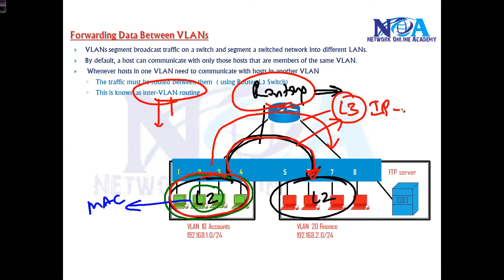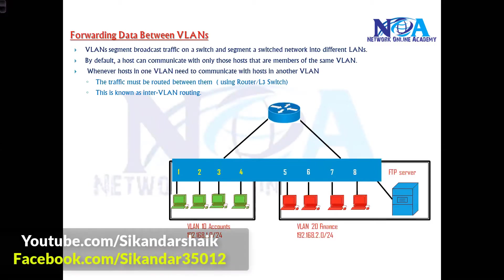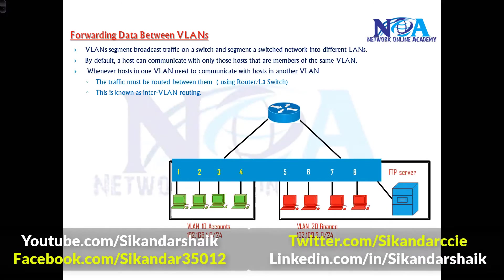You need a gateway and you need to configure some routing. There are different methods to do this, and we will see all those methods. In this section we will see how we can allow users of one VLAN to access resources on another VLAN. We can use a router or we can use a multilayer switch — we will be seeing all those options.